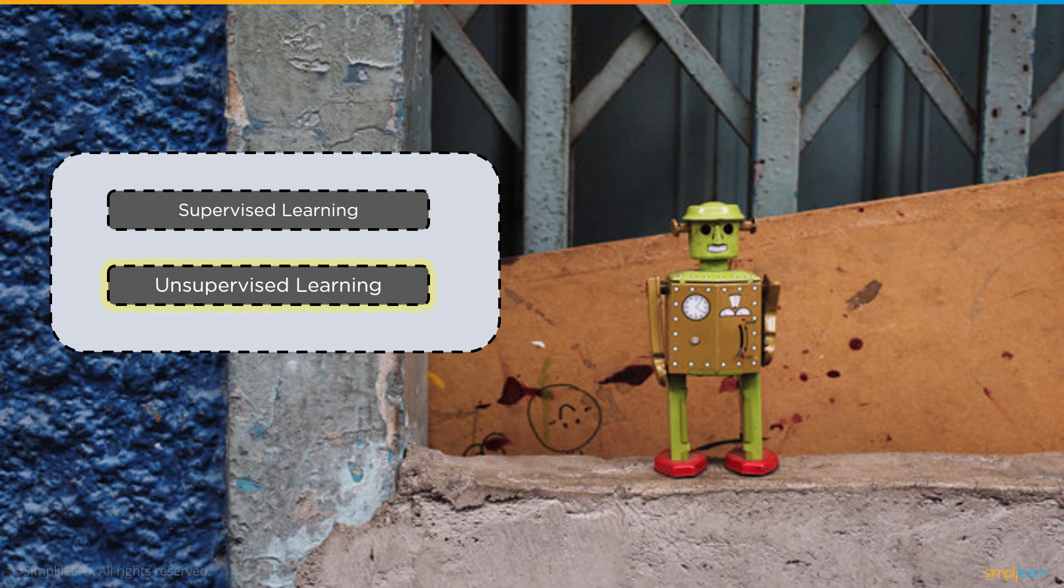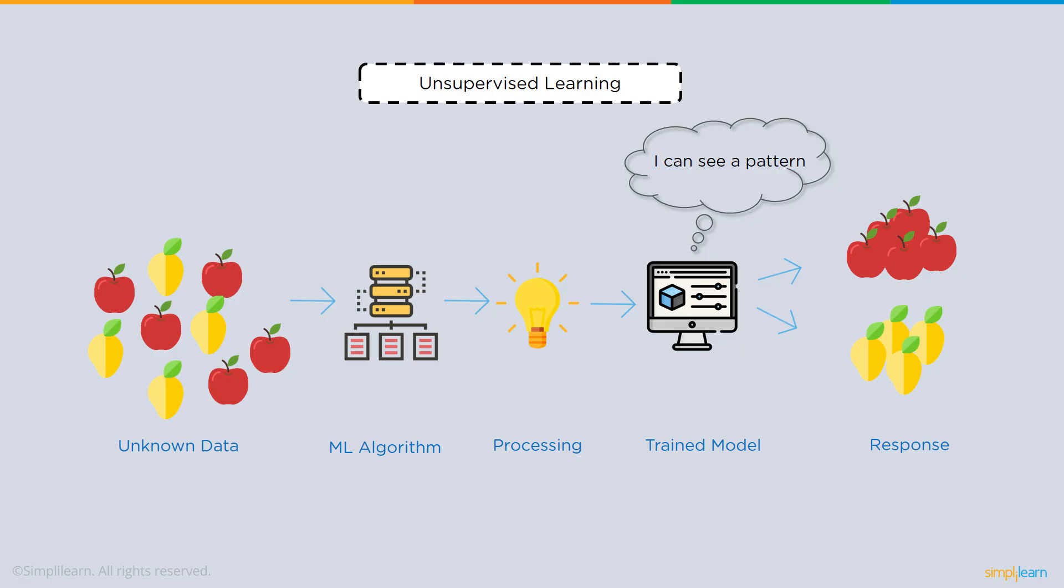If you have supervised learning, then we should also look at unsupervised learning. We have unknown data. In this case you can see we have a bunch of fruit and we might not have labeled it. We've never had anybody look at it and say this is what this is. We take that data and put it through the machine learning algorithm, then that goes through the processing and the trained model.